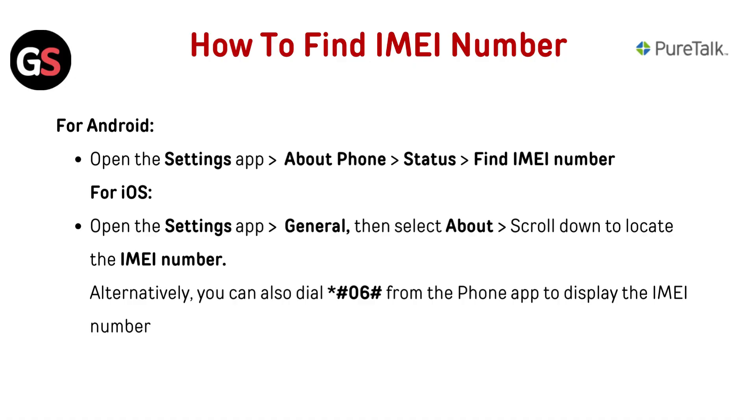For iOS: open the Settings app, go to General, then select About, and scroll down to locate the IMEI number.